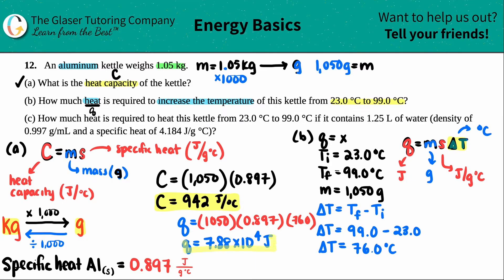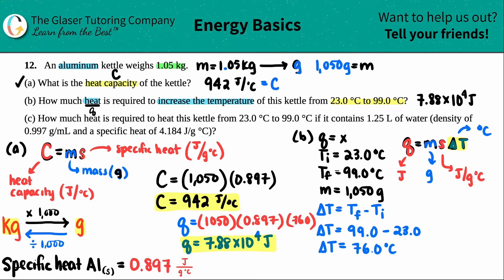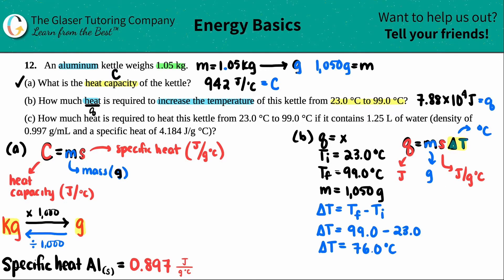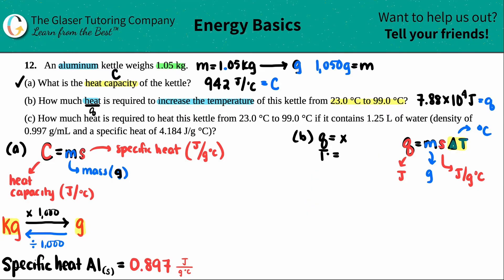That's the answer for Part B. So summarizing: Part A, the heat capacity C is 942 joules per degree Celsius; Part B, Q is 7.88 times 10 to the 4th joules. I'll keep the formulas visible because they're important.